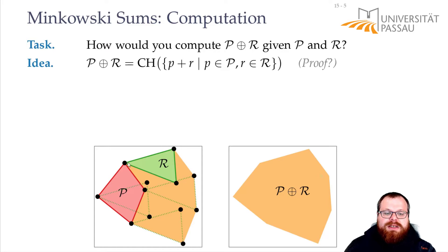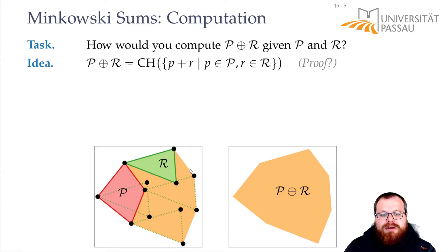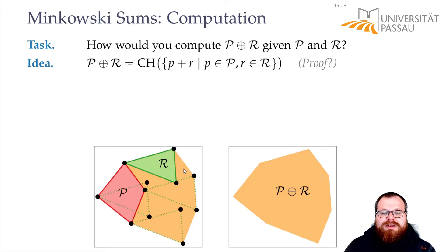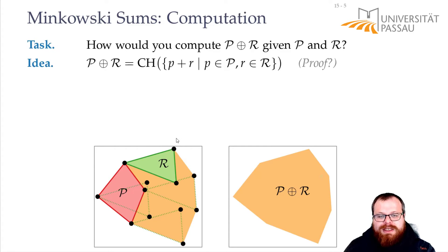For example, this point here we get by the vector sum of this point and this point. And now we know that if we take the next edge, that corresponds to an edge here. So if we move along, we get all the points that are a combination of this edge here and of this point, up until we get to the next corner. And this corner here is a combination of this point and this point, as we can see by this copy of R placed at this corner. So when we get to the next corner of the Minkowski sum, we again have the vector sum of two corners of the input polygons. So every corner of the Minkowski sum is the vector sum of two corners of the polygons. And since the Minkowski sum is convex already by definition, that means if we just take these candidate points and take the convex hull of them, then we get exactly the Minkowski sum.